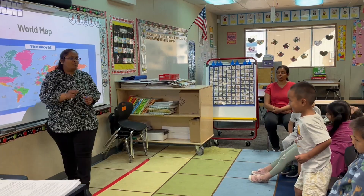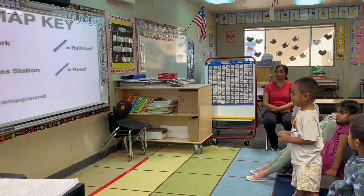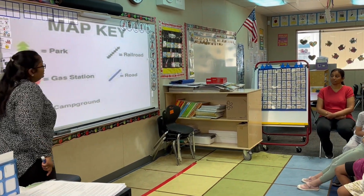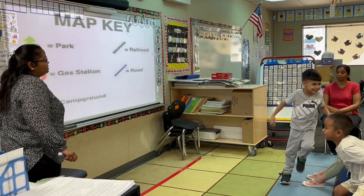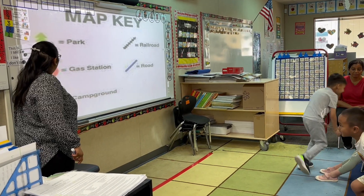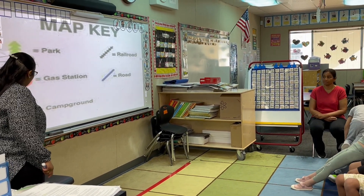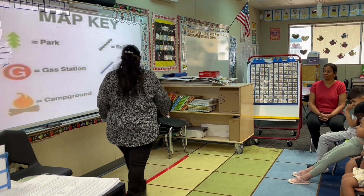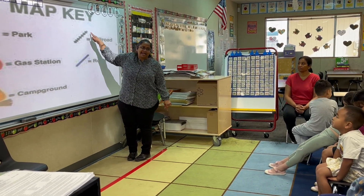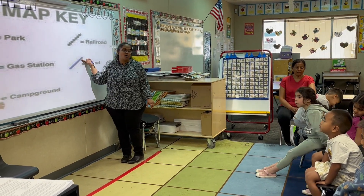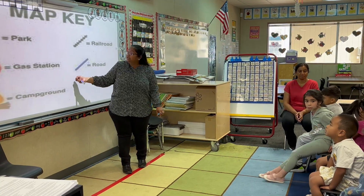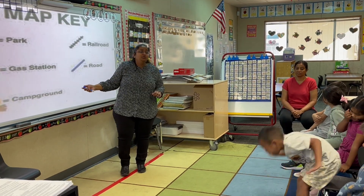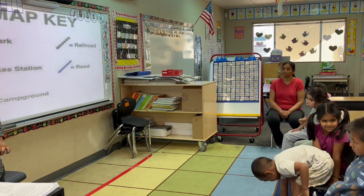Today we are going to talk more about the neighborhood map. So this is a map key. The map key — what is all this? Tree. Tree. What could this be? G says gas station. And what does this fire mean? Where can you find fire? Camping. Camping. Good job. And this one is a railroad — there is a zigzag line, it represents railroad. And this is a road. So map key is a key that tells us what objects or what places you have nearby.